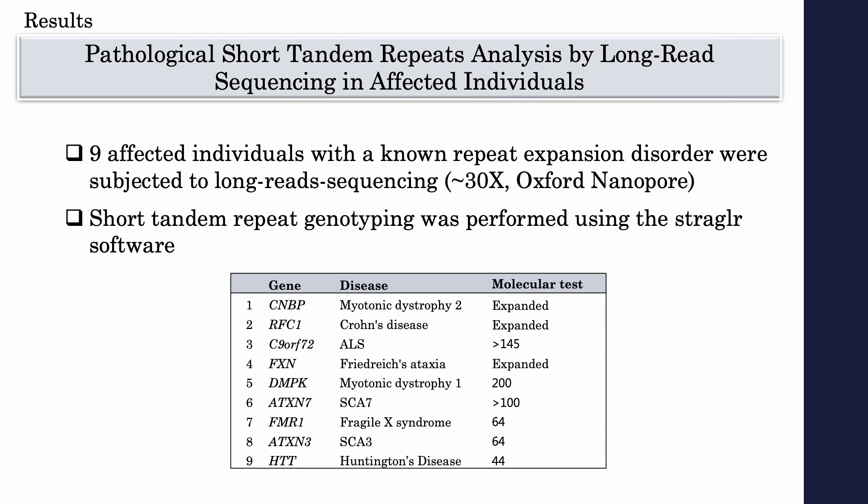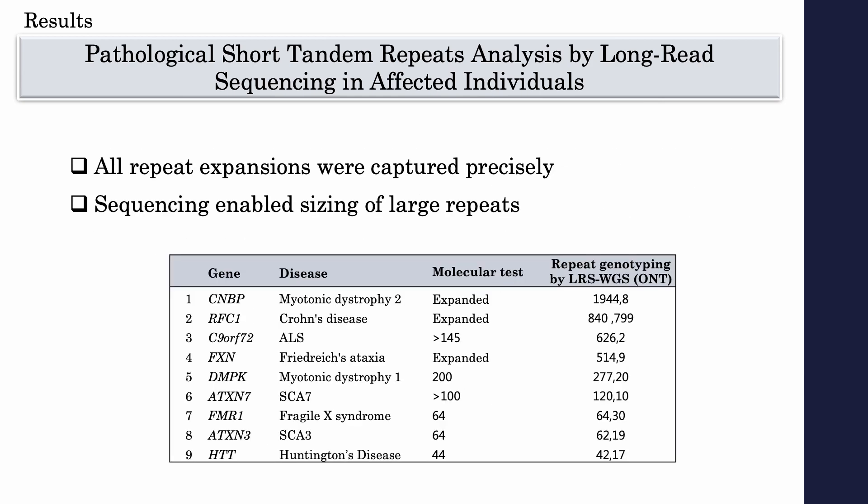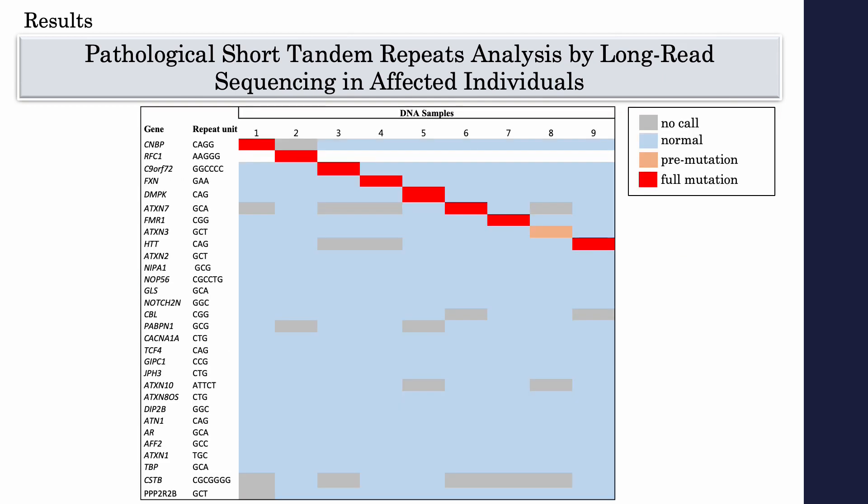The genotyping of repeat regions was performed using the Straglr software. All repeat expansions were captured precisely, and moreover, the long-read sequencing enabled sizing of large repeats where the molecular test had failed to do so.